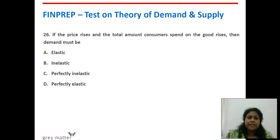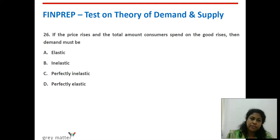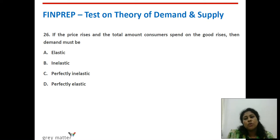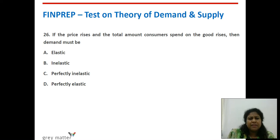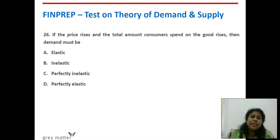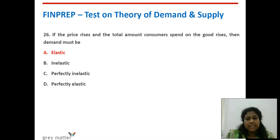Twenty-sixth question: if the price rises and the total amount consumers spend on the good also rises, then demand must be what? Price is increasing and spending on the good is also rising. The demand must be inelastic — the answer is inelastic.